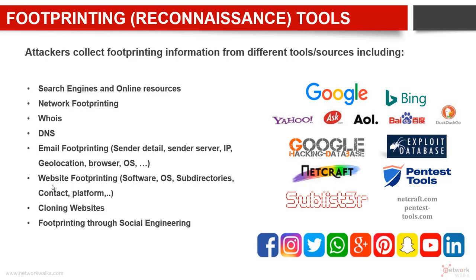We can also use a lot of website footprinting tools. For example, tools which can tell us what software is running on the target operating system, what different application softwares are running on the target server, what is their operating system, what are their sub-directories, what are the contact details, and so many other information.